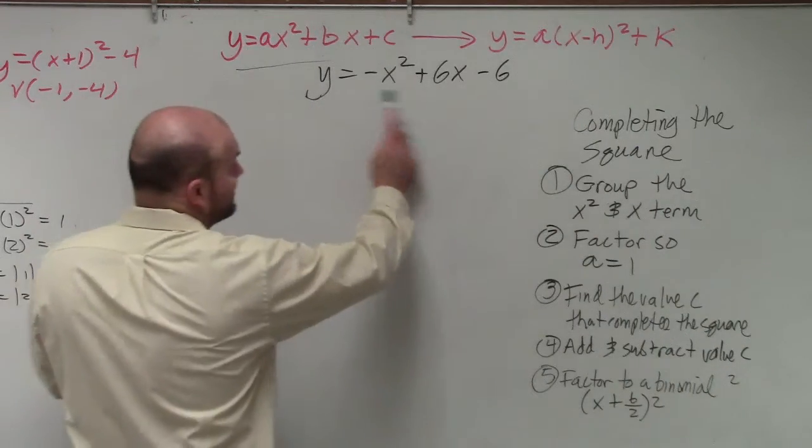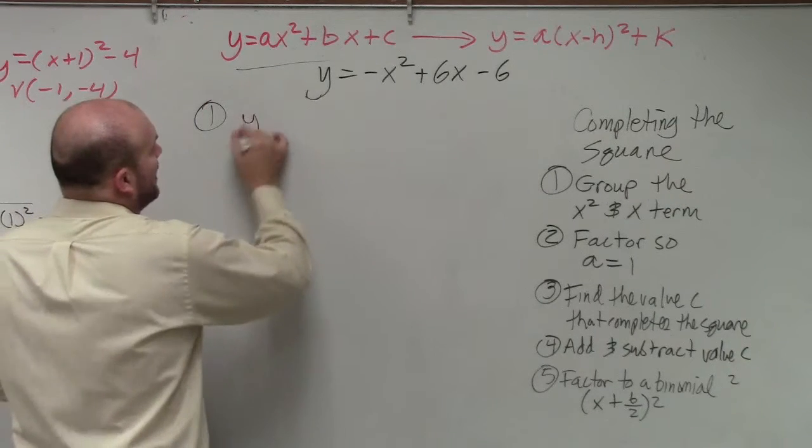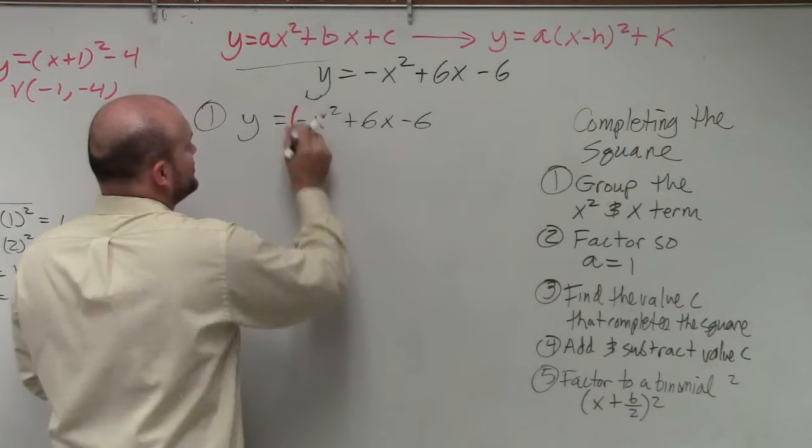we're just going to follow our steps. The first step is to group the x squared and x terms. So we just say y equals negative x squared plus 6x minus 6. Group the two terms.